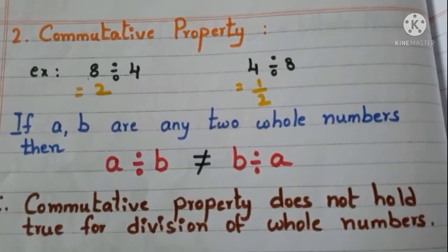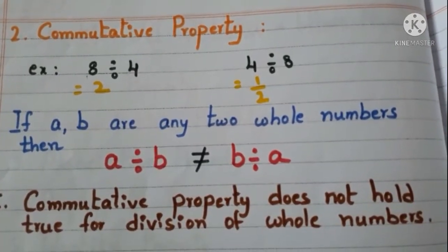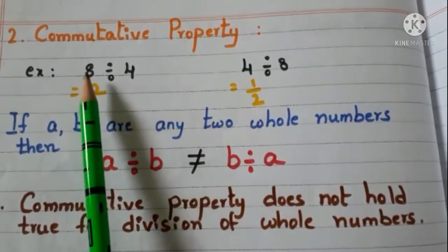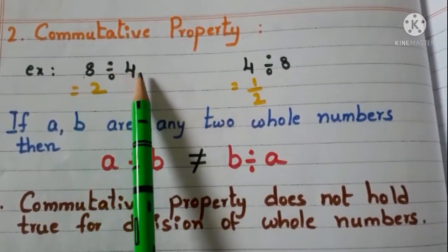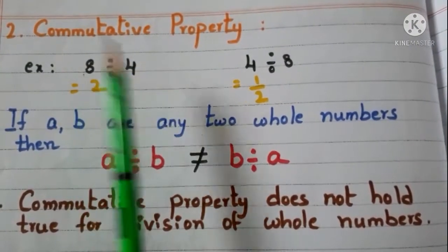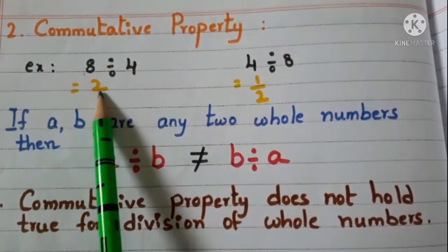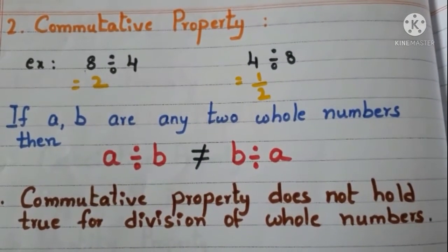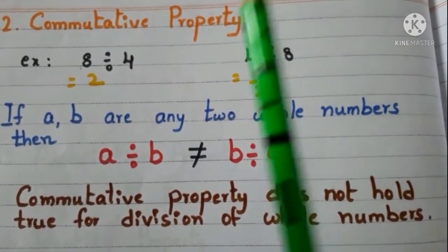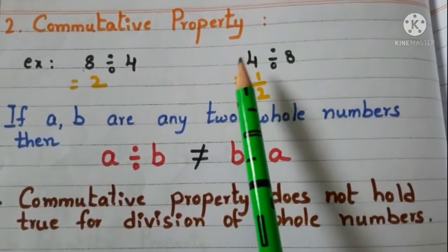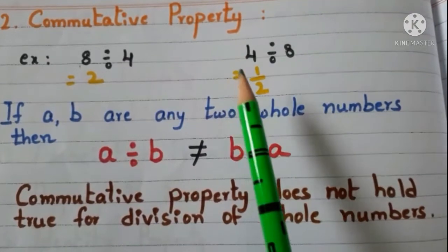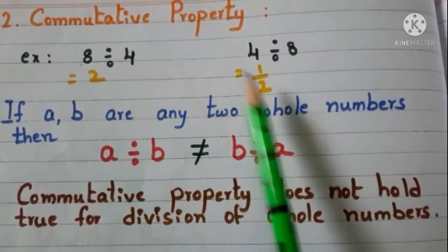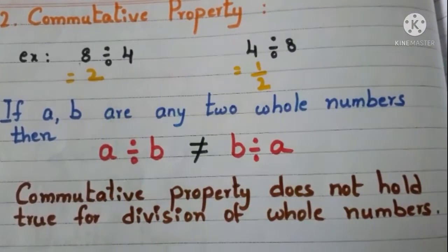Now commutative property. Let us see with an example. Take 2 whole numbers 8 and 4, and divide 8 with 4 — the answer is 2. Now change the order, meaning divide 4 with 8 — the answer is 1/2.